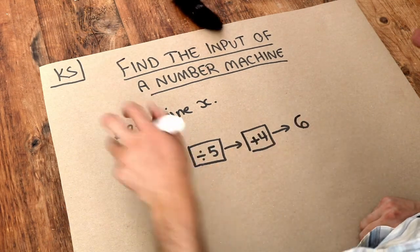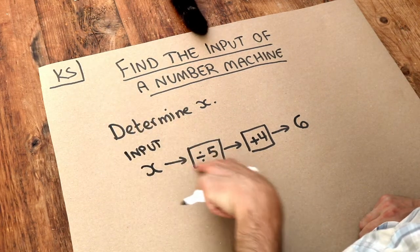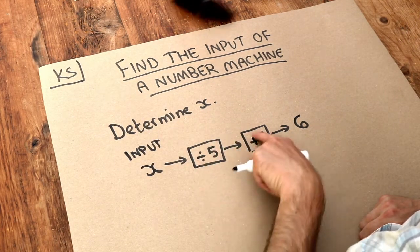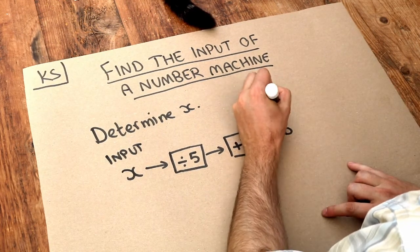Now just to recap, a number machine is where you have some input, you feed it into some operations, whether it's dividing or adding or multiplying, and then it spits out an output at the end.